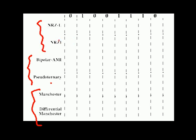Let's begin with NRZ level. We start from zero, and after that we got one, so we need to change to another level. We got zero, and we got zero — we continue with the same level. Until we got another value: we got one, we change. We got one, we remain the same level. We got zero, we need to change.